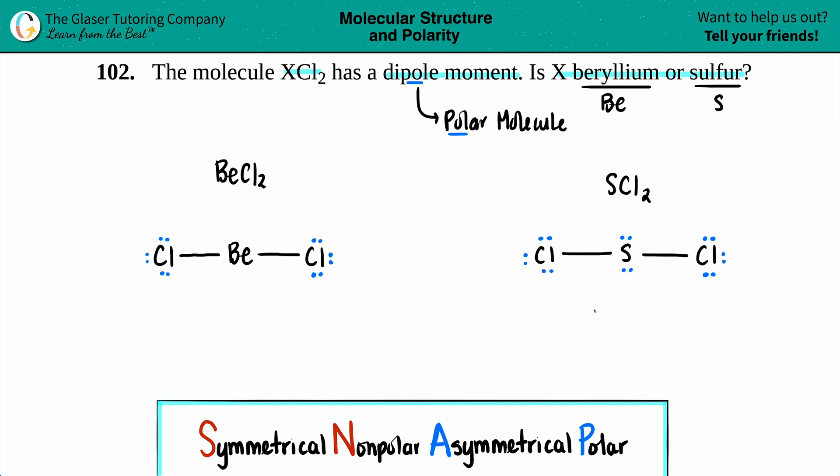So it looks like the only difference between these two is not the atoms on the left or the right, because chlorines are chlorines, but the only difference is that for sulfur you have these lone pairs and beryllium you don't have any. This is the difference between being classified as a nonpolar or a polar molecule.